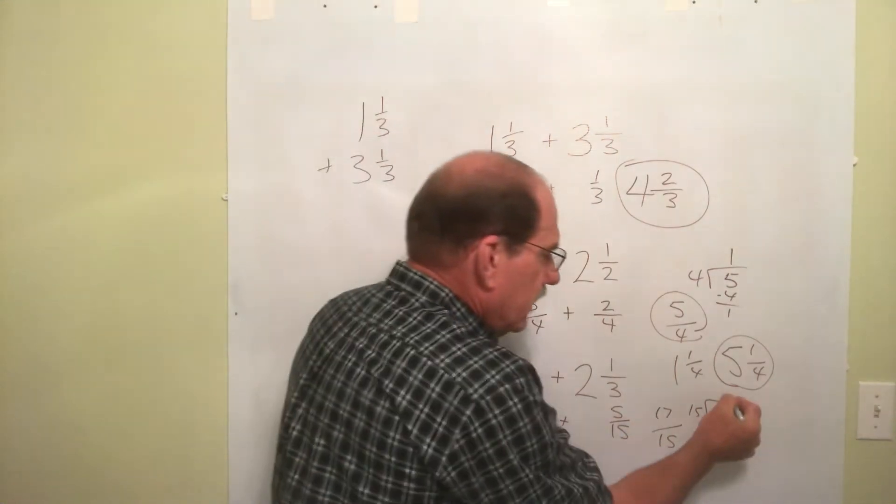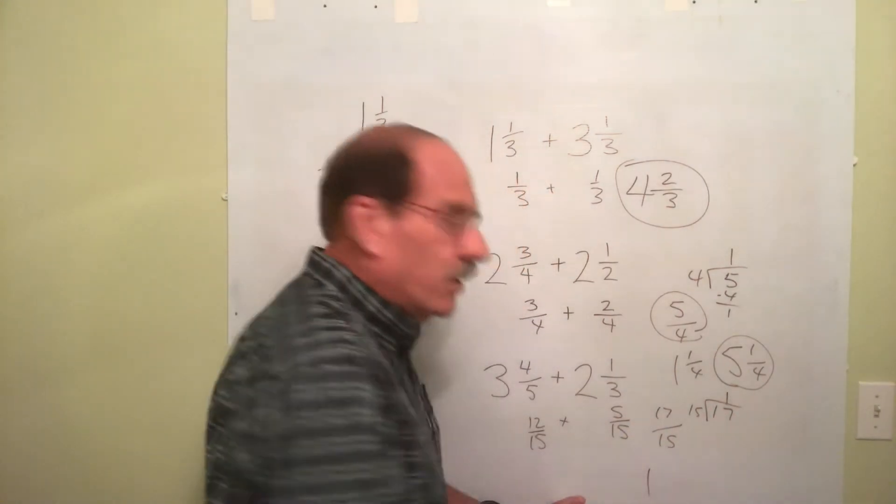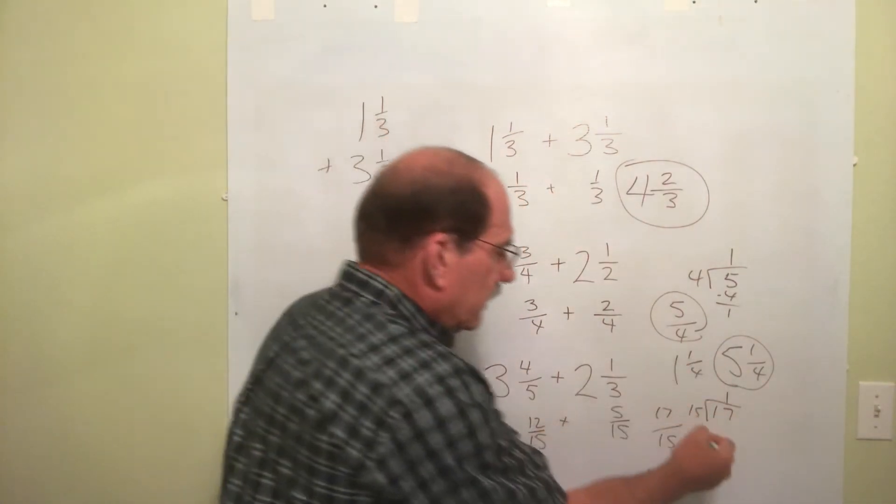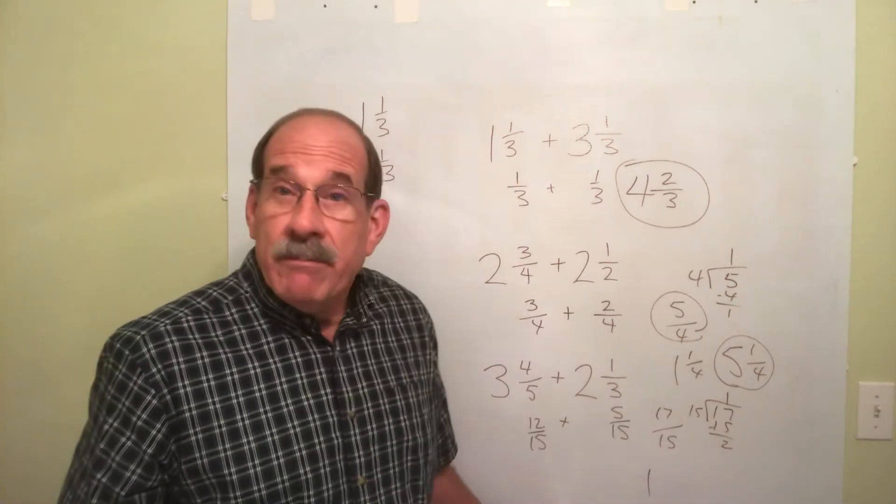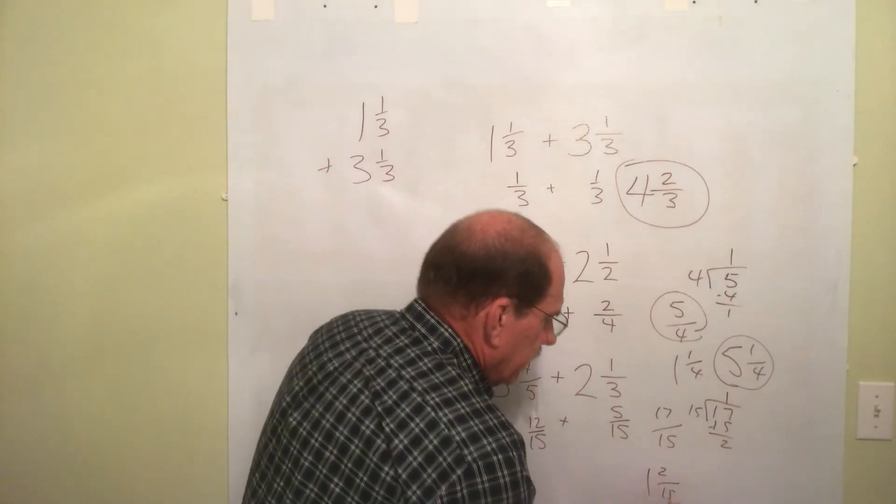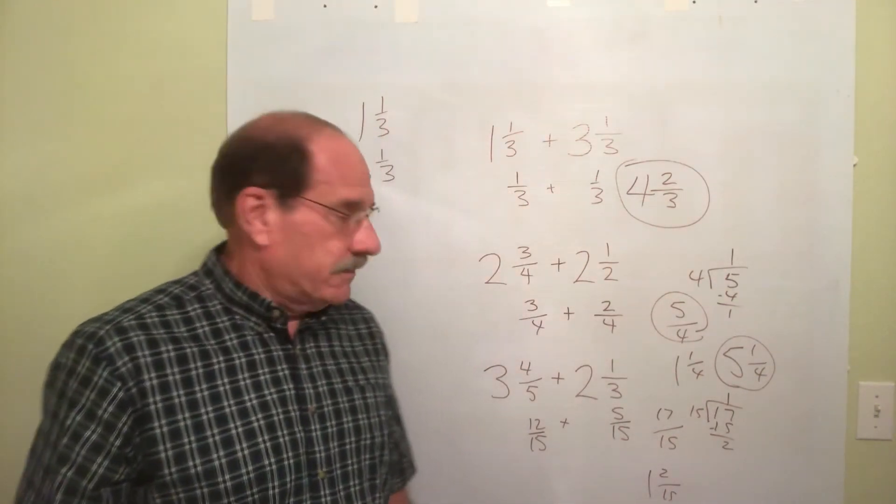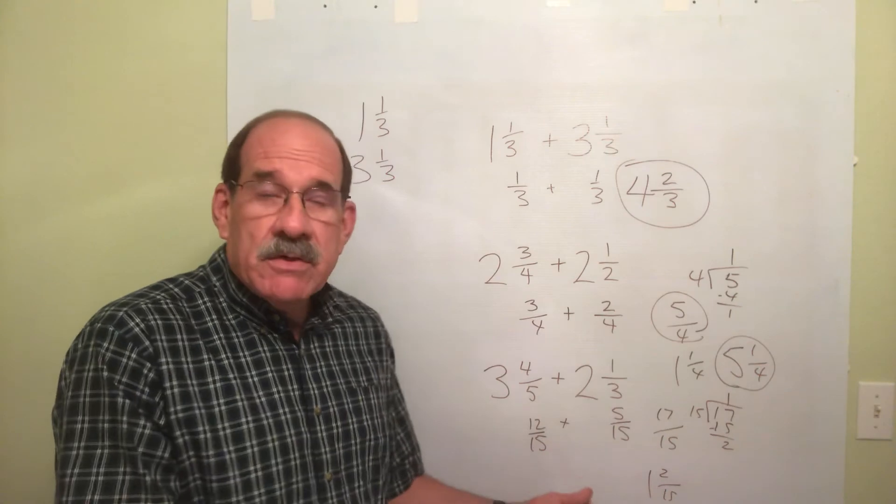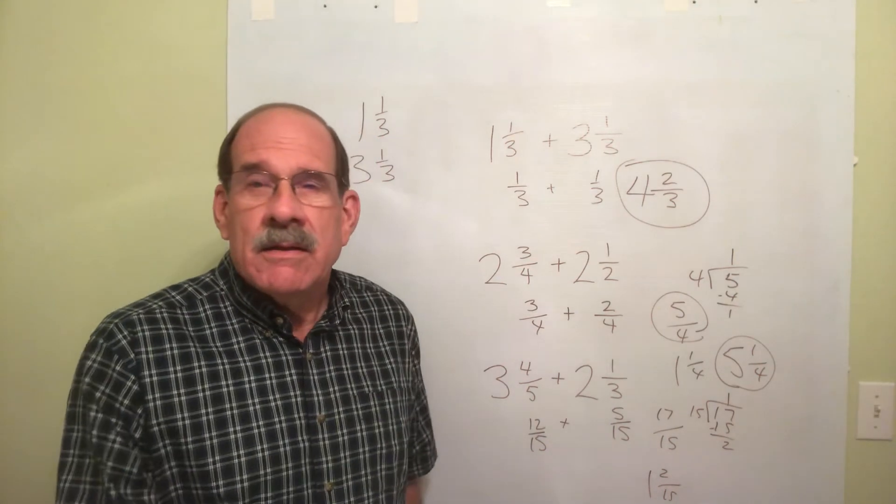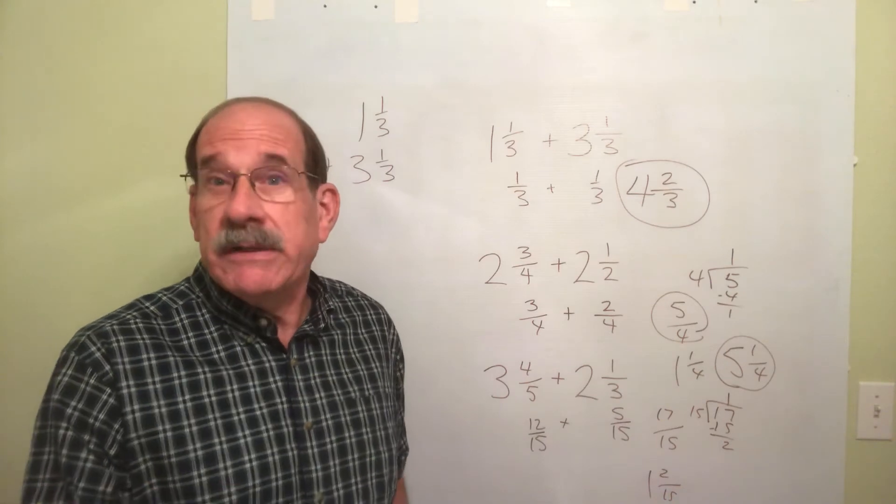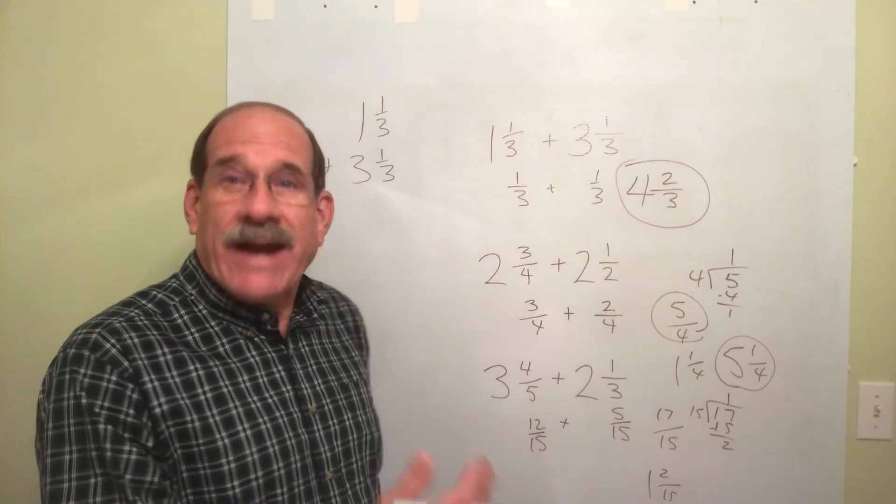15 goes into 17 one time. So that becomes a 1 as a whole number. 1 times 15 is 15. I subtract. I got a remainder of 2. 1 and 2 fifteenths. Can't reduce it. I've already converted that into a mixed number. So I've totally fixed or messed with or completed my addition of my fraction part.